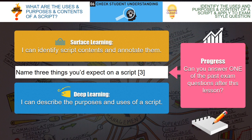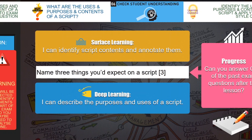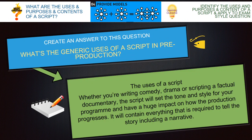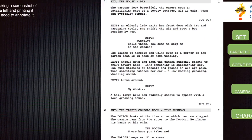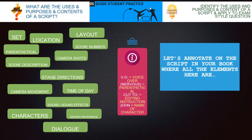We should now be able to describe the purpose and uses of a script. Here's a question to try: name three things that you would expect on a script. Pause the video and have a go. You could have any of the following — any of the green labels on screen could be part of your answer.